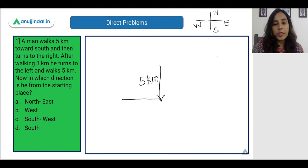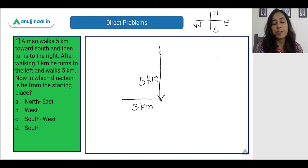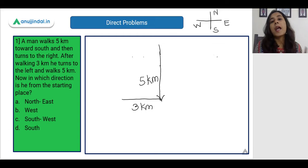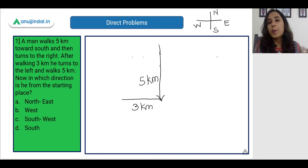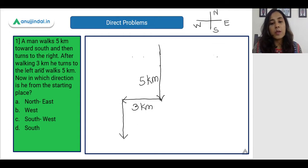He walks three kilometers. So first he walked five kilometers, then he is walking three kilometers. Please take care that your diagram is drawn to scale because then only you will be able to find out the correct directions. After walking three kilometers, he turns to the left and walks five kilometers — so he is again walking five kilometers in this direction.